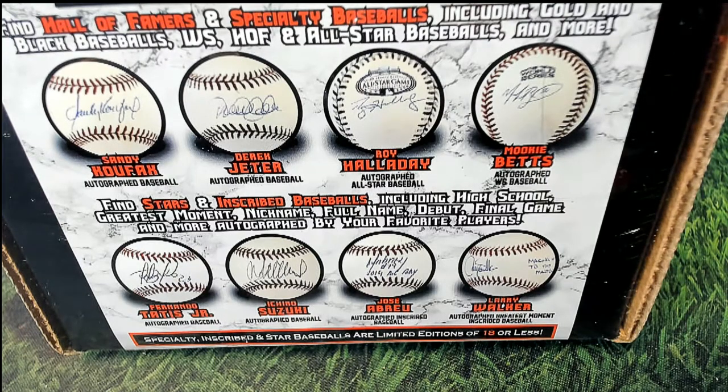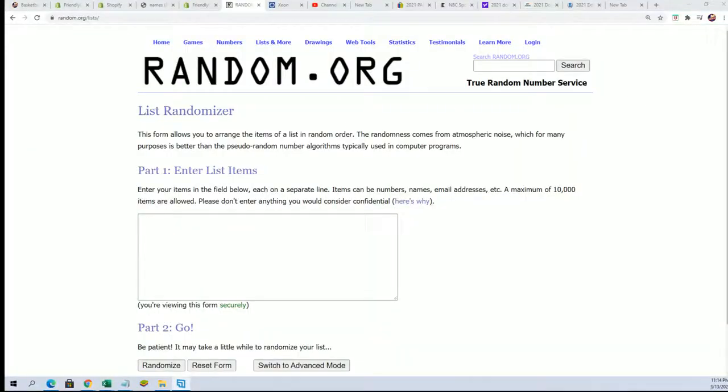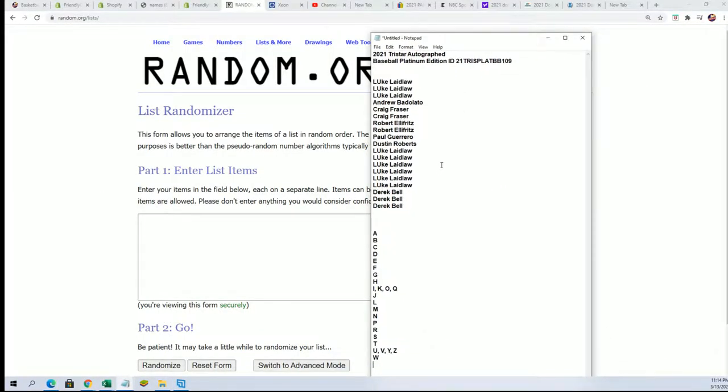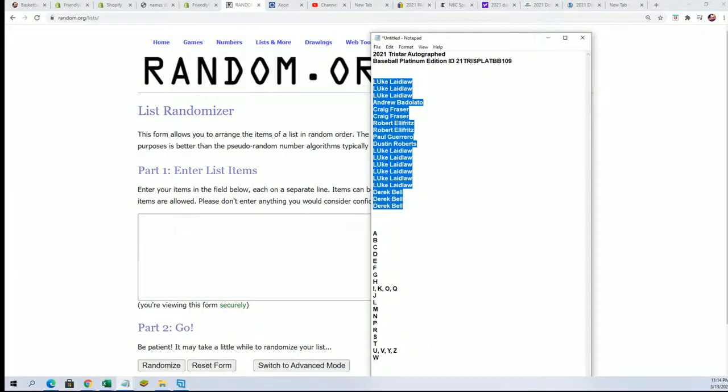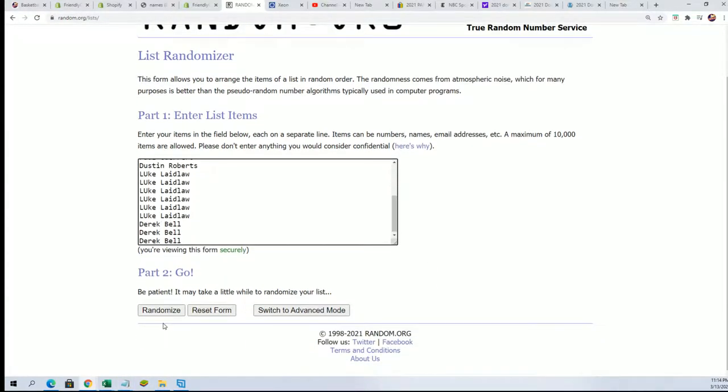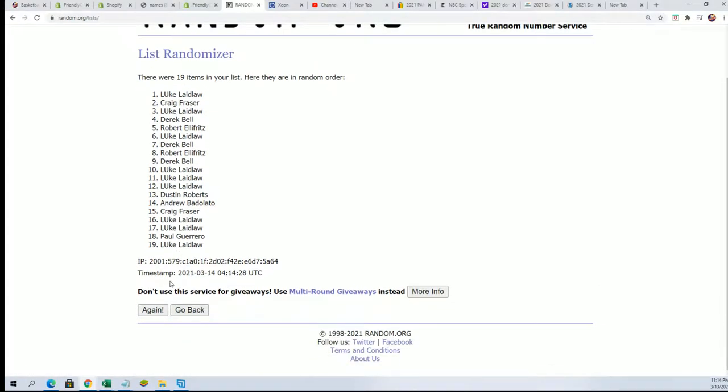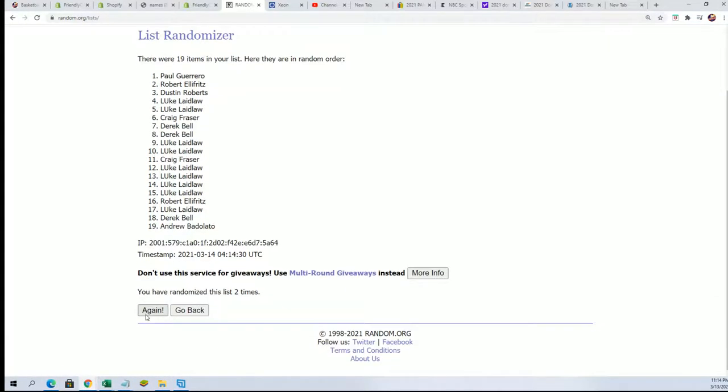All right, here we go. Good luck in the autographed baseball box break where everybody gets a last name letter initial. I'm just going to be randomizing these two lists seven times apiece and stacking them up side by side after they go through here. So that's how you get matched up with your letter.